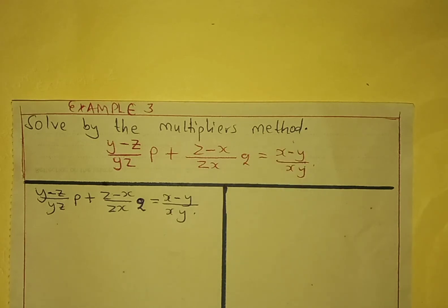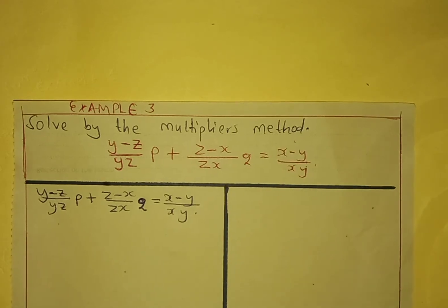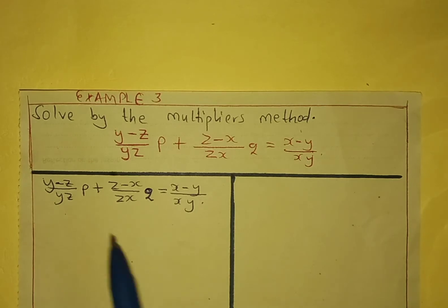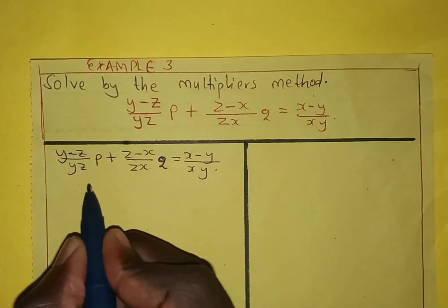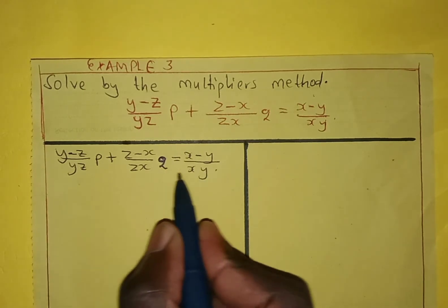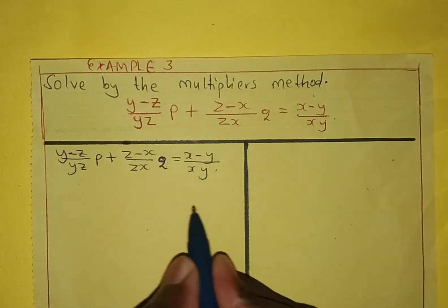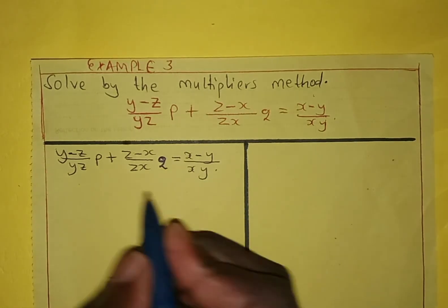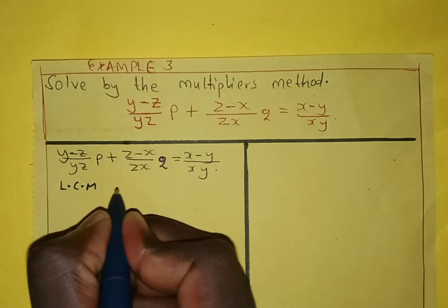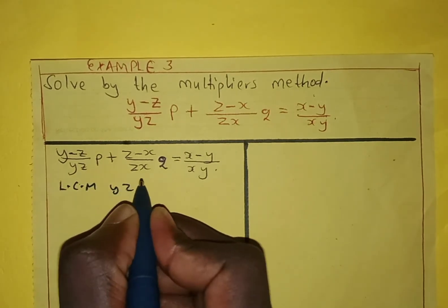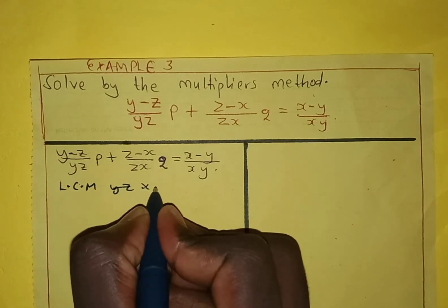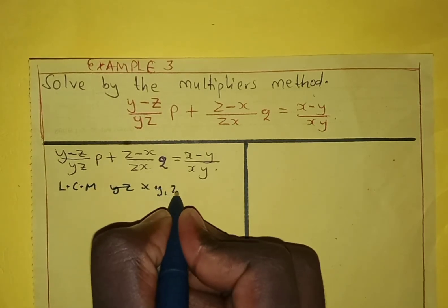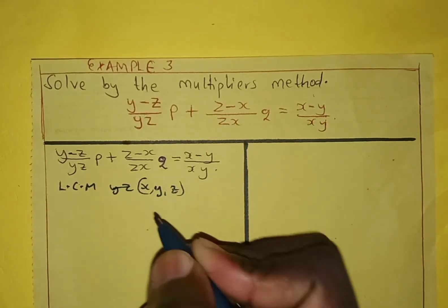First, let us make a simplified form of this equation before solving it. What we should do here is to multiply through this equation by the LCM. The LCM is x, y, and z.